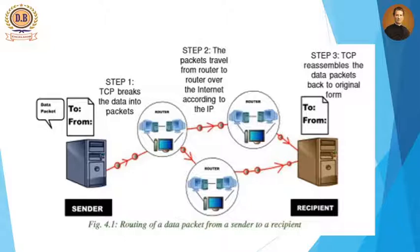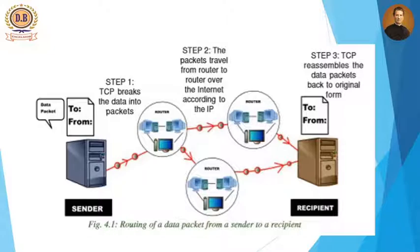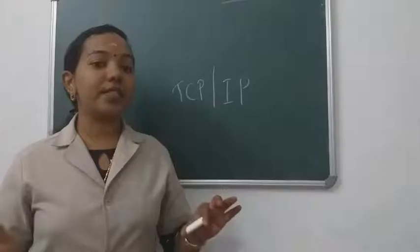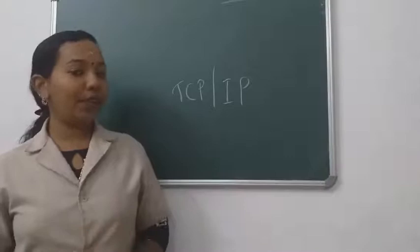So to summarize: first, data is broken into small packets and transferred to the router. The router transfers data one by one, and in the third step the receiver receives the data in packet format and reassembles it into the original format. This is what happens when we send data from sender to receiver — this is communication on web.